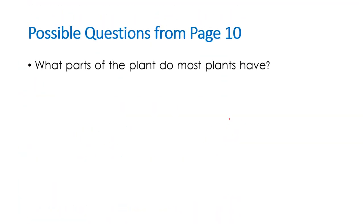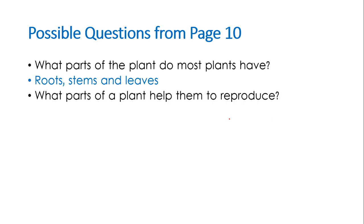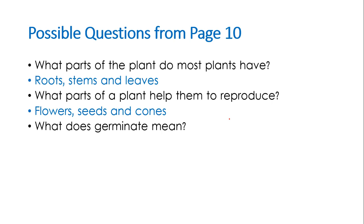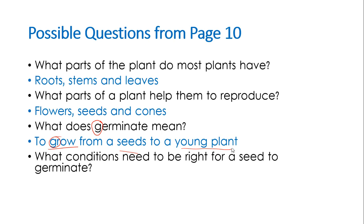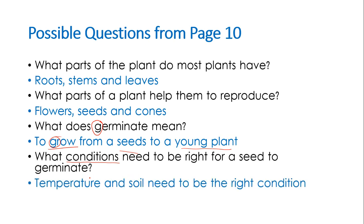You may be asked to name the structures most plants have: roots, stems, and leaves. What parts of the plant help it reproduce? Flowers, seeds, and cones. What does 'germinate' mean? The 'germ-' part means to grow — germinate means to grow from a seed to a young plant. Plants don't just grow; they need the right conditions: the right temperature (not too hot or too cold), soil with enough nutrients, and the right amount of water.